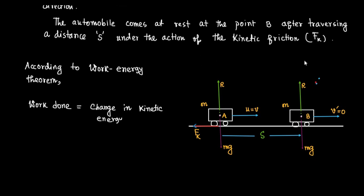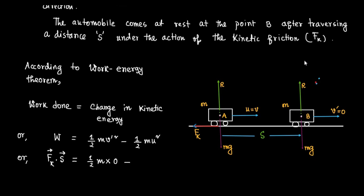Work done will be equal to change in kinetic energy: W equals half m v prime square minus half m u square. The work done against kinetic friction Fk is vector Fk dot vector s, equal to half m into zero minus half m into v square, since final velocity v prime at point B is zero and initial velocity u equals v.